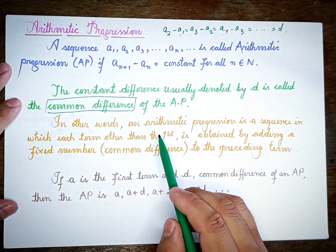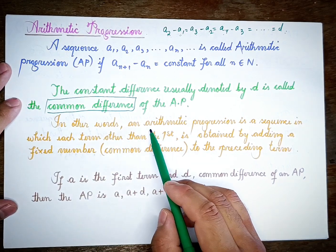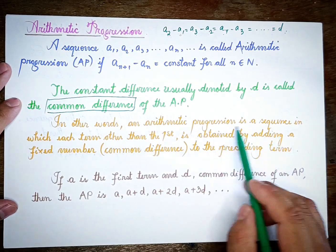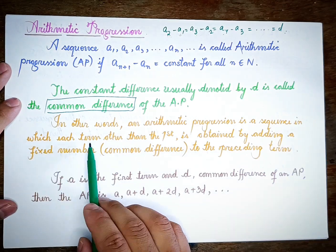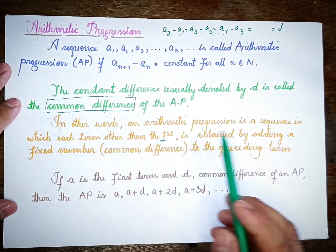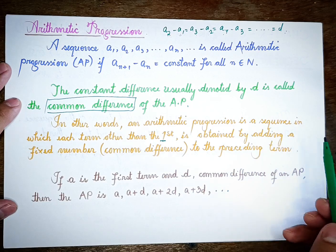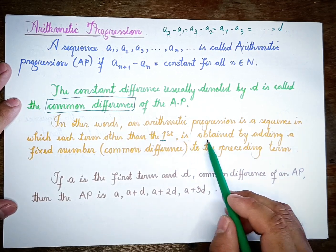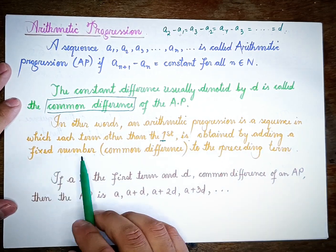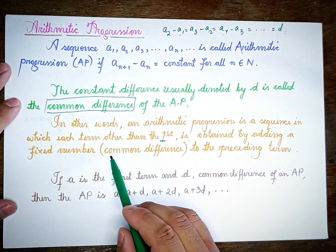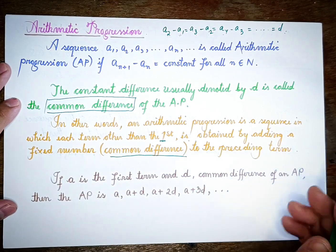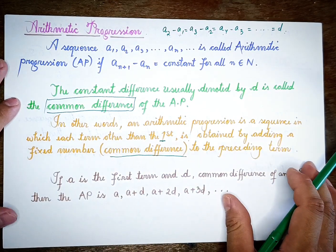This is a sequence in which each term, other than the first, is obtained by adding a fixed number to the preceding term.